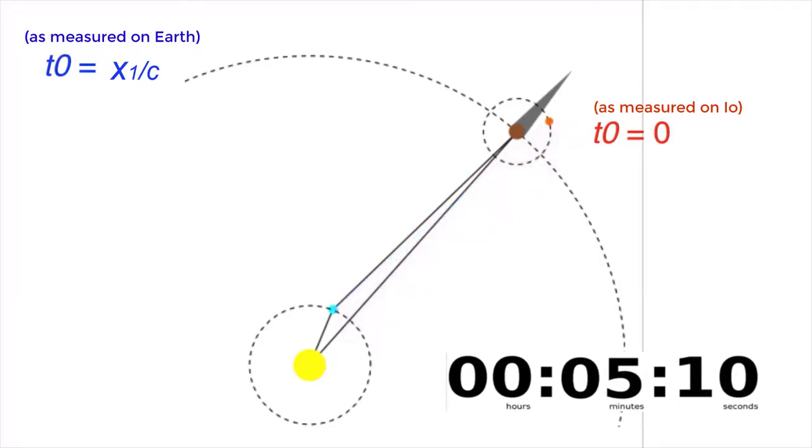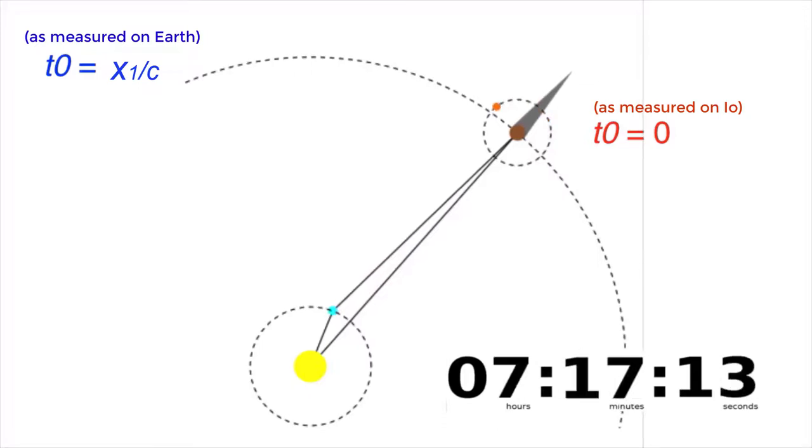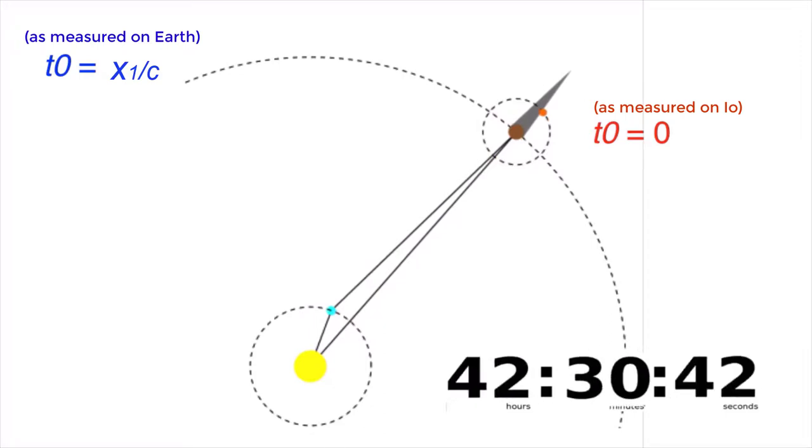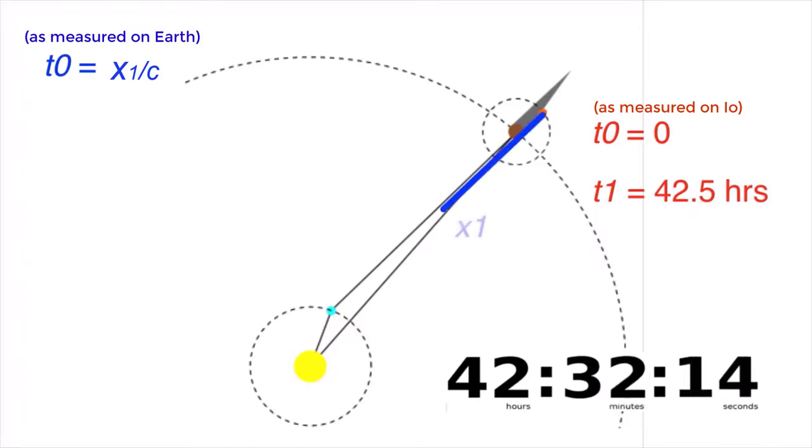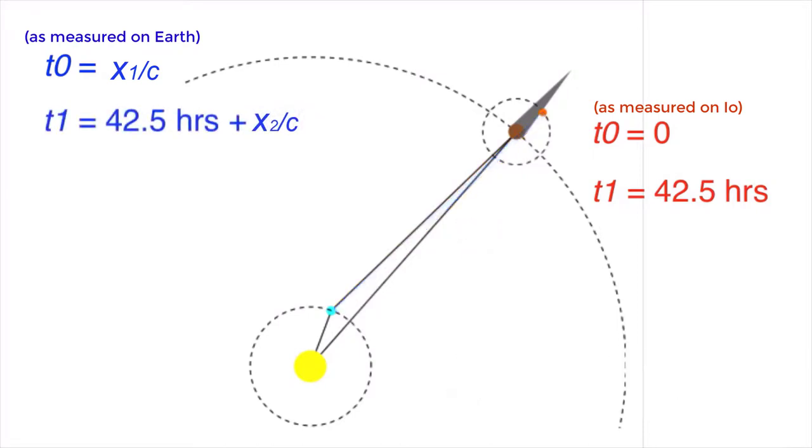When Io reappears, orbits once, and disappears a second time behind the shadow, the timer shows 42.5 hours. But again, on Earth, you see Io disappear a little bit later in time, because it takes time for the light to reach Earth. That is, the time at which Earth sees the end of the orbit is 42.5 hours plus x2 on c.